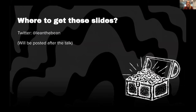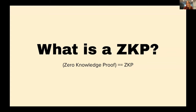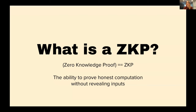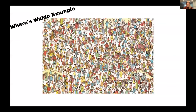I'm going to post all these slides on my Twitter afterwards. This is meant to give you an overview of what zero knowledge proofs are, and I've added a bunch of links so you can go through them later at your own time. So what is a zero knowledge proof, or what is a ZKP? Really, it's the ability to prove honest computation without revealing inputs. The example I'd like to use is a Where's Waldo example.